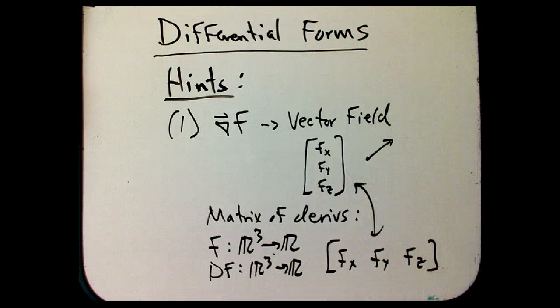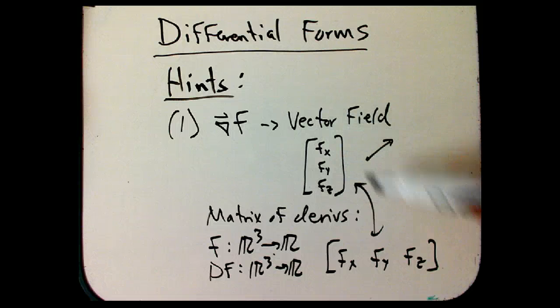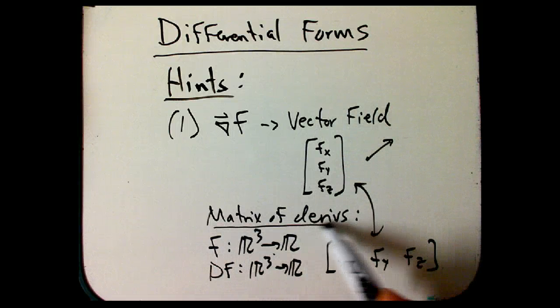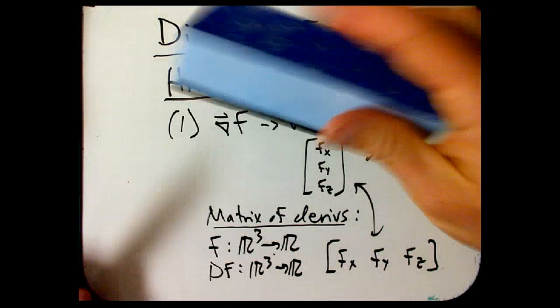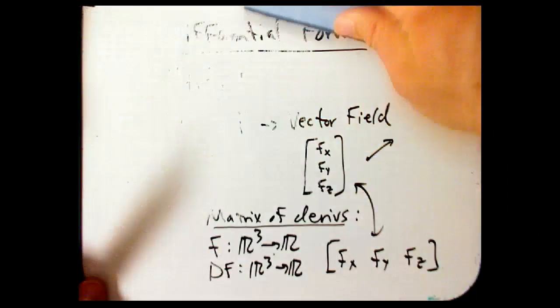So that might seem like a minor issue, but that's one of the hints that we're kind of thinking about this wrong. A vector field seems to suggest a column vector, and yet the matrix of derivatives, which we know is really good because it works with the chain rule really well, and that's really significant.